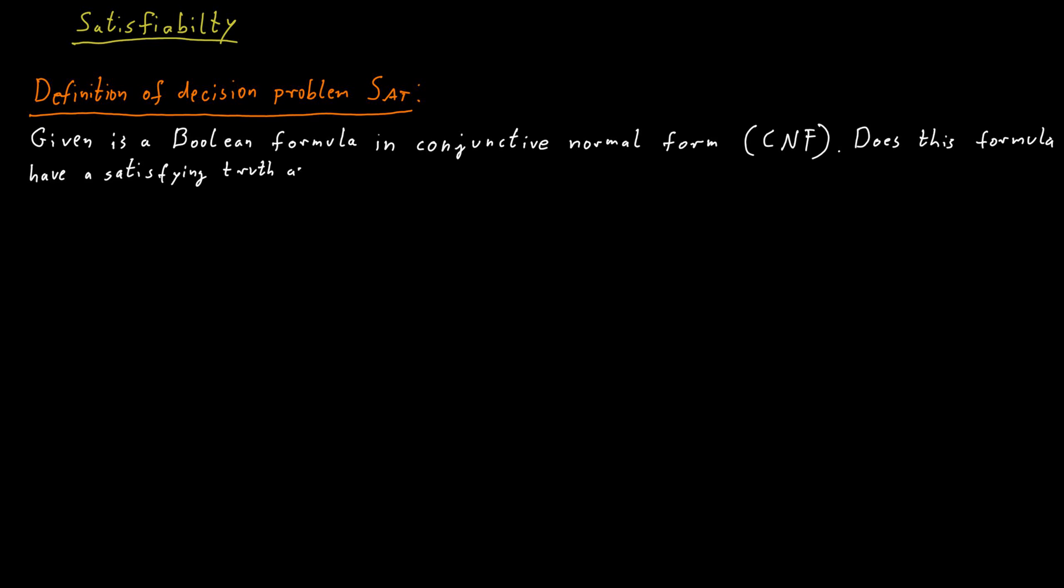One of the most well-known decision problems is satisfiability. In satisfiability, we are given a Boolean formula in conjunctive normal form and we're asking whether that formula has a satisfying truth assignment.